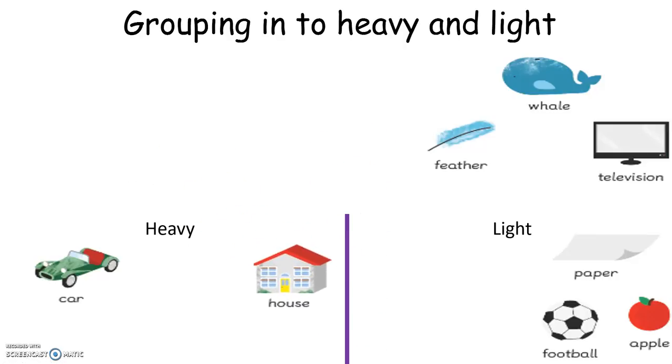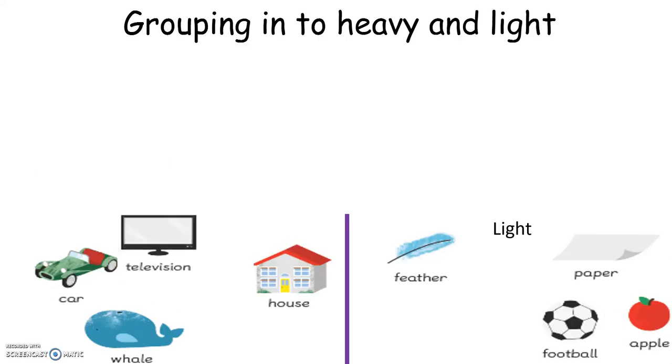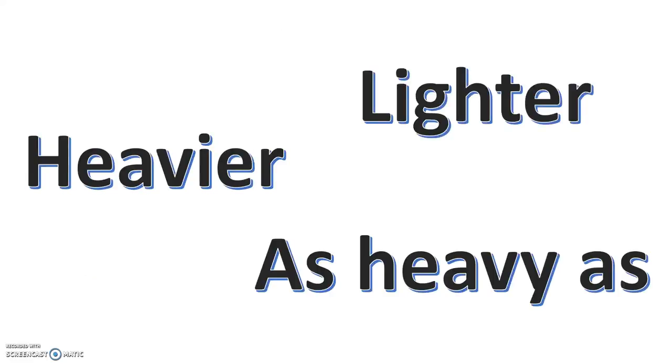A house would go in the heavy category. A feather would go in the light group, a whale would go in the heavy group, and also a television would be heavy as well. Let's recap on some of the vocabulary we have learnt.